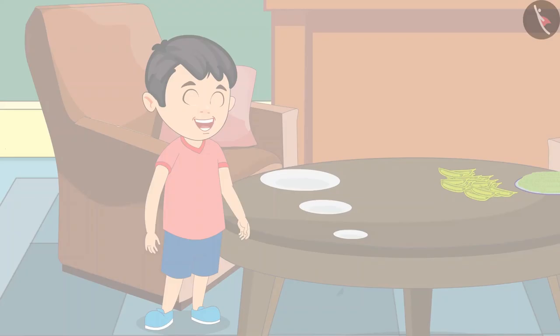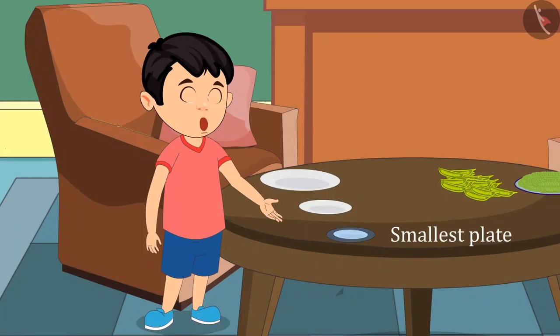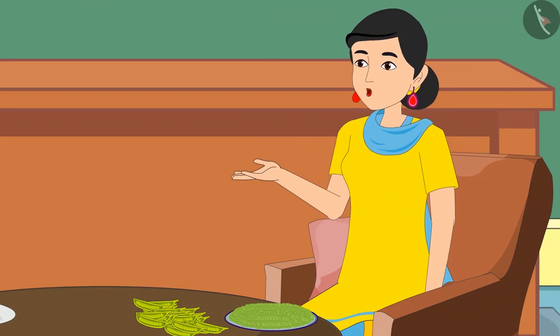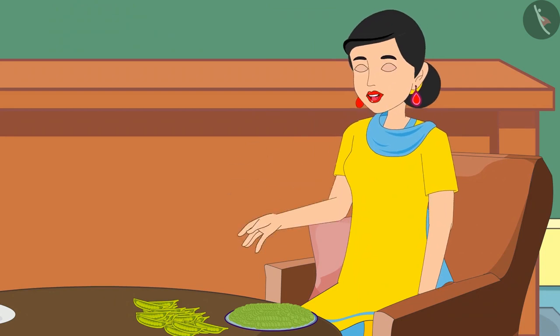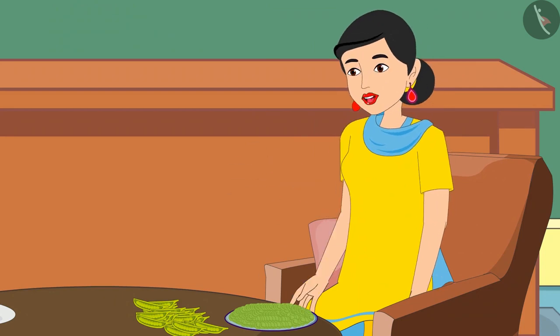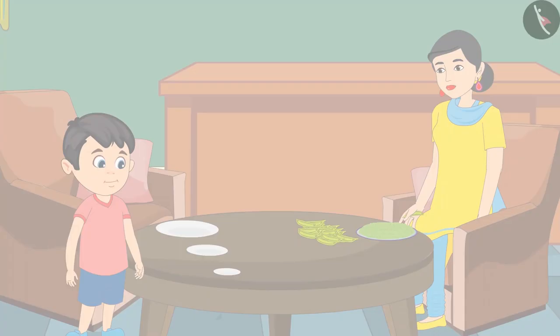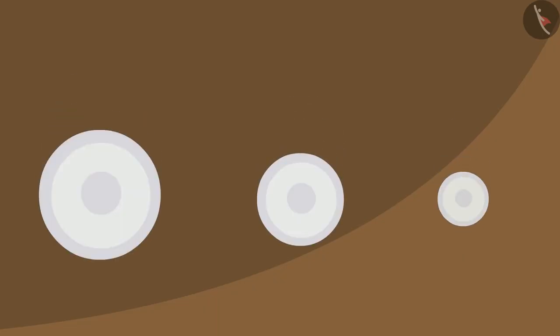Mom replied, 'Chotu, you are right, both these plates are smaller than this plate. Can you tell me which is the smallest among them?' Chotu answered, 'Yes mom, this plate is the smallest, isn't it?' Mom said, 'Yes Chotu, you are absolutely right! Now put the other two plates back please.' Chotu said, 'Okay mom!'